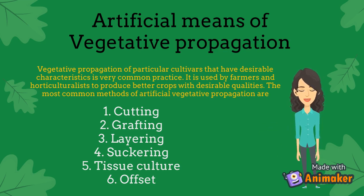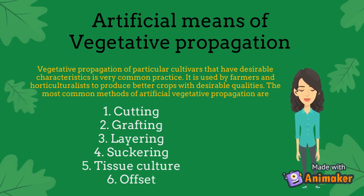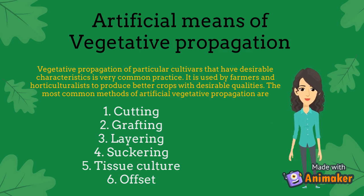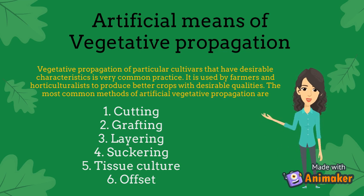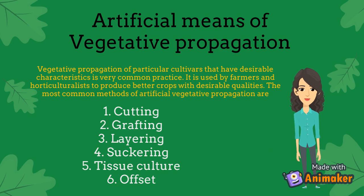Tissue culture: in tissue culture, plant cells are taken from various parts of the plant and are cultured and nurtured in a sterilized medium. The mass of developed tissue, known as the callus, is then cultured in a hormone-laden medium and eventually develops into plantlets, which are then planted and eventually develop into grown plants.